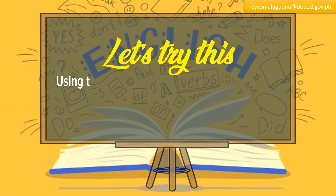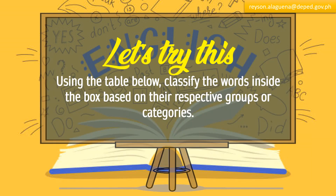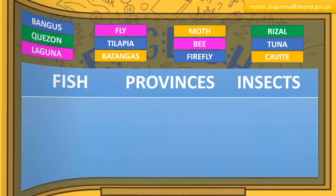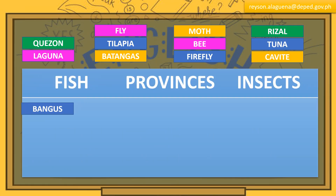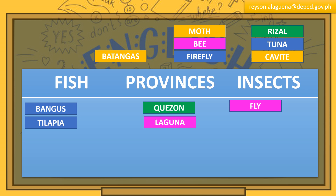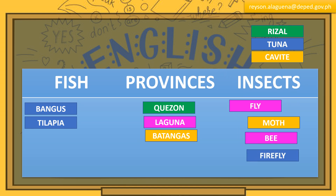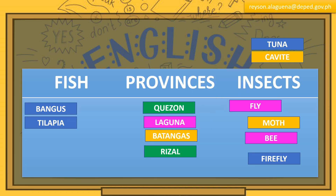Let's try this. Using the table below, classify the words inside the box based on their respective groups or categories. Bangus is under the fish category. Quezon is a province. Laguna is a province. Tuna is a fish. Fly is an insect. Tilapia is a fish. Batangas is a province. Moth is an insect. Bee is also an insect. Firefly is also an insect. Rizal is a province. Tuna is a fish. And Cavite is a province.